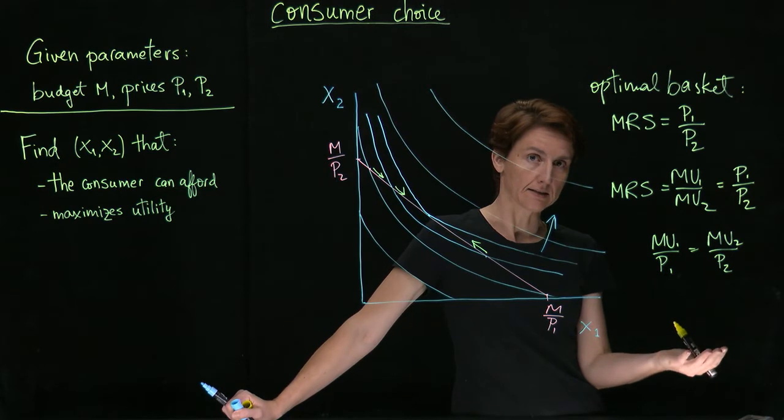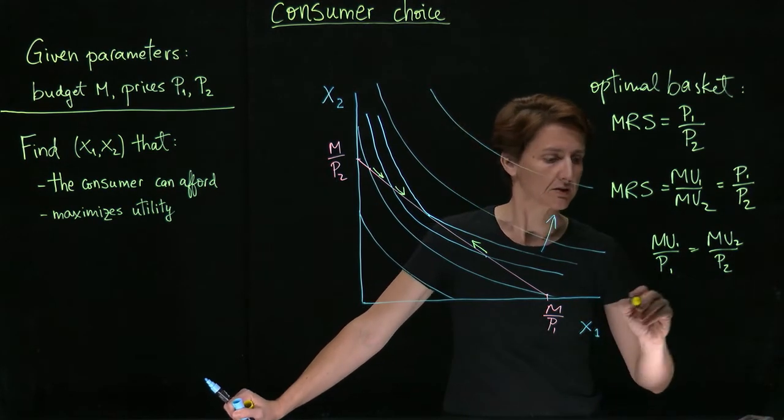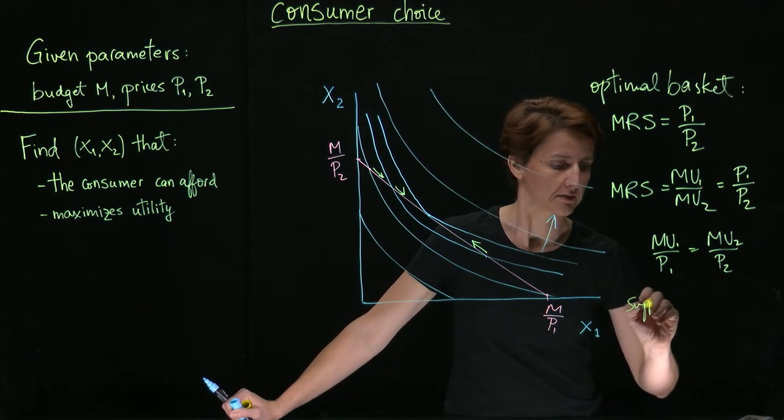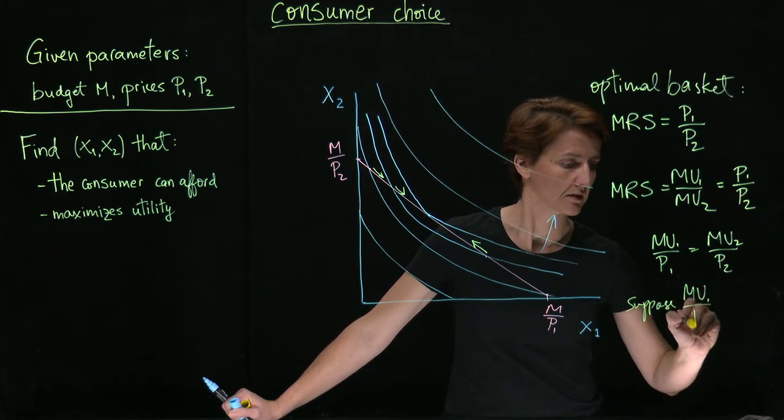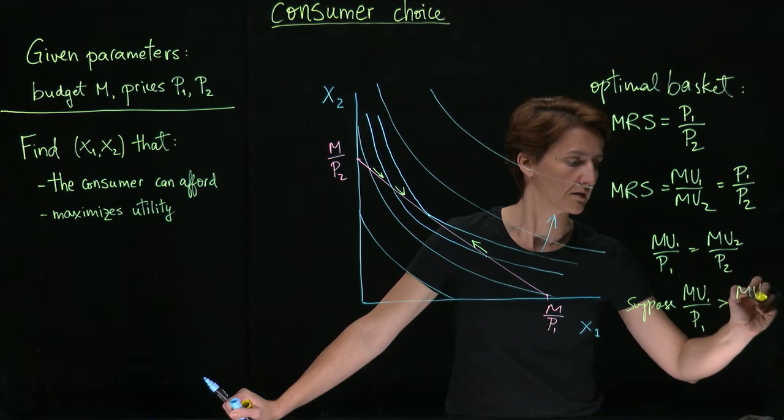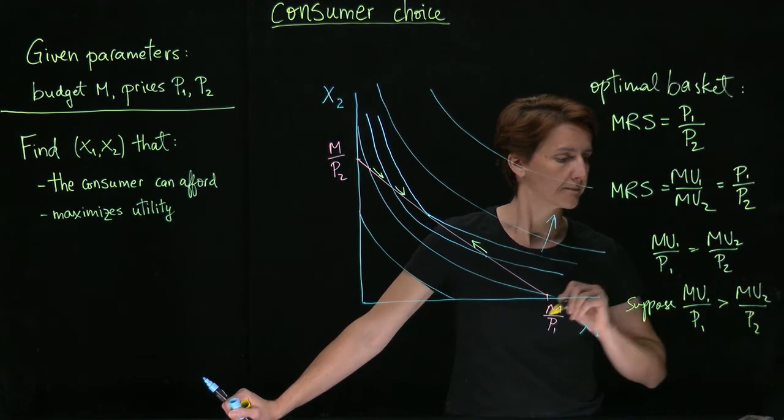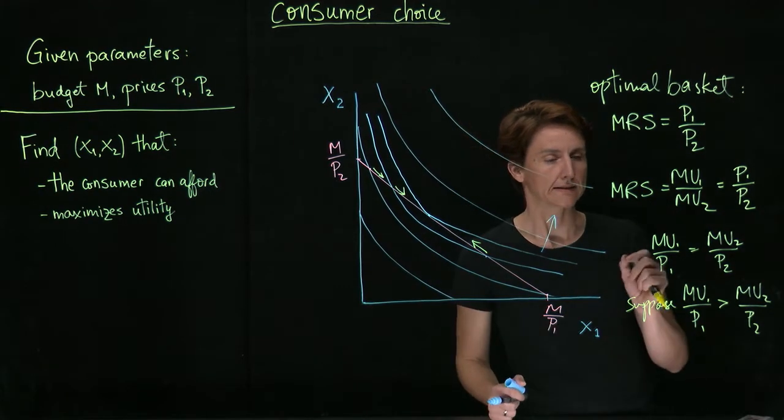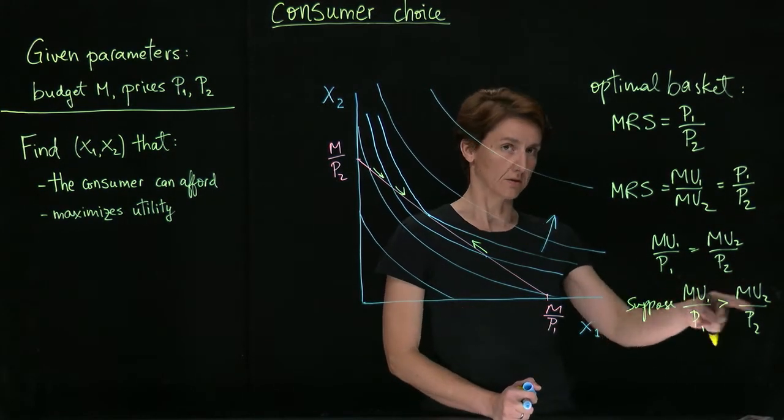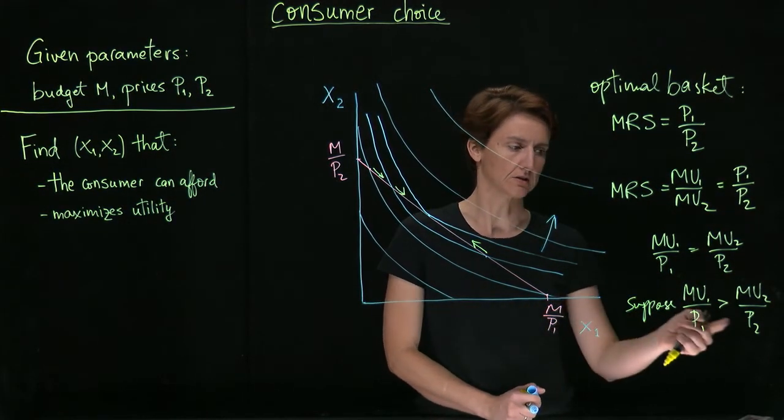Intuitively, why is that the case? Simply because suppose we had an inequality. If a dollar spent on good one at the margin brought more utility, more satisfaction than a dollar spent on good two, then we would simply reallocate our consumption.